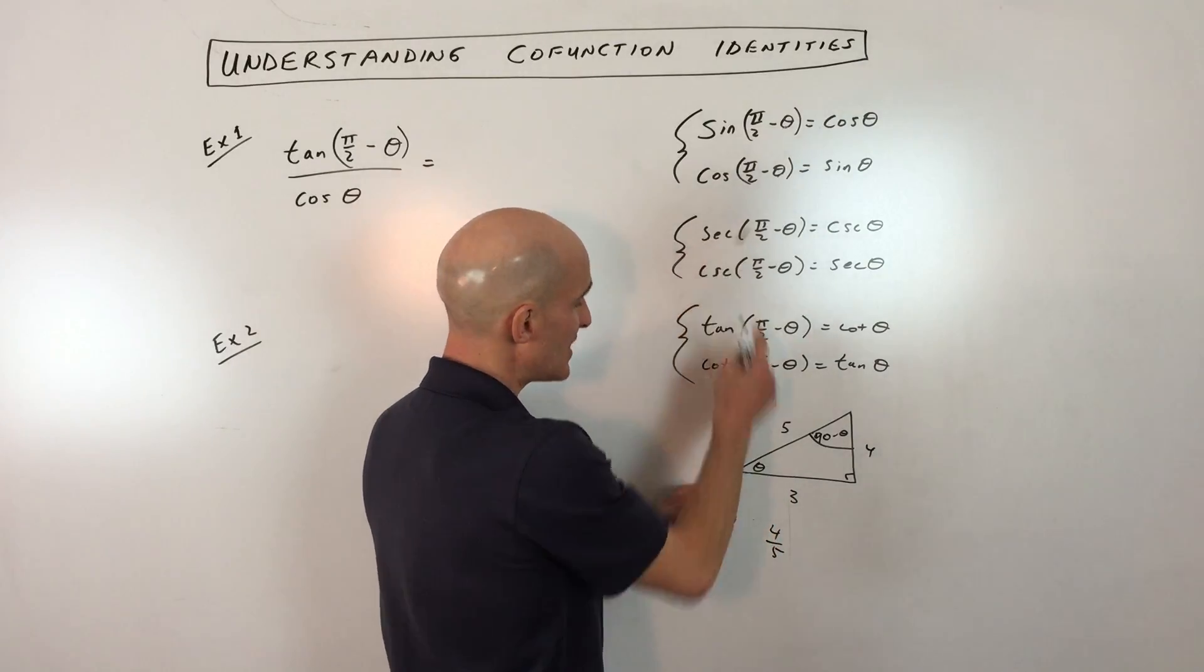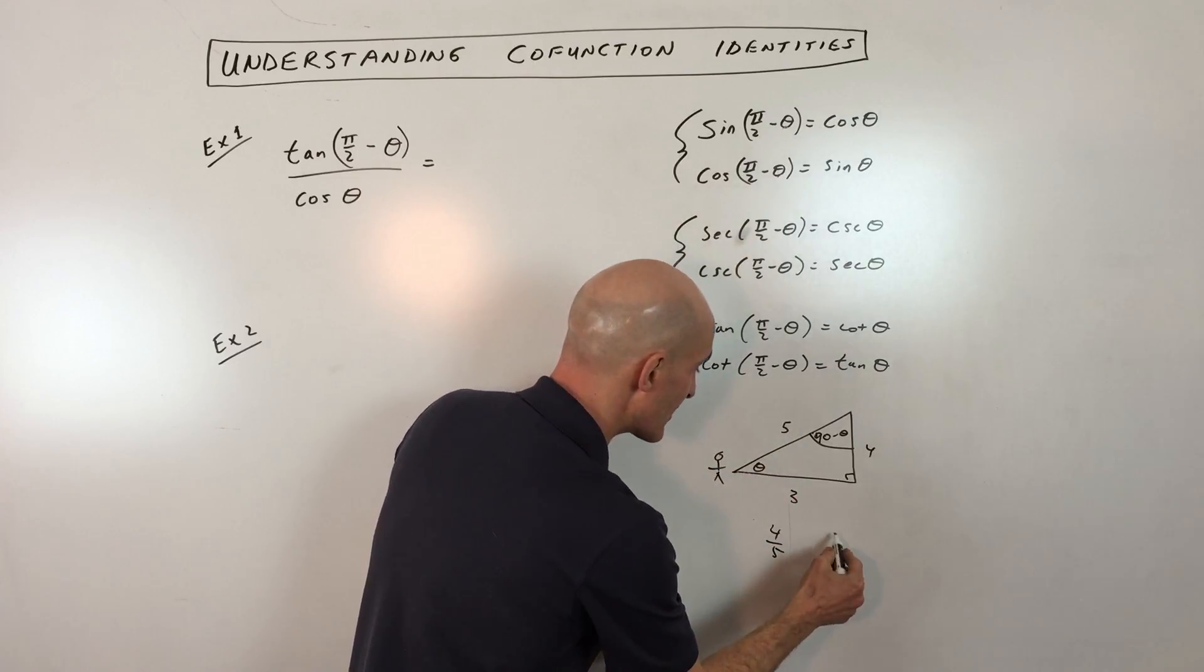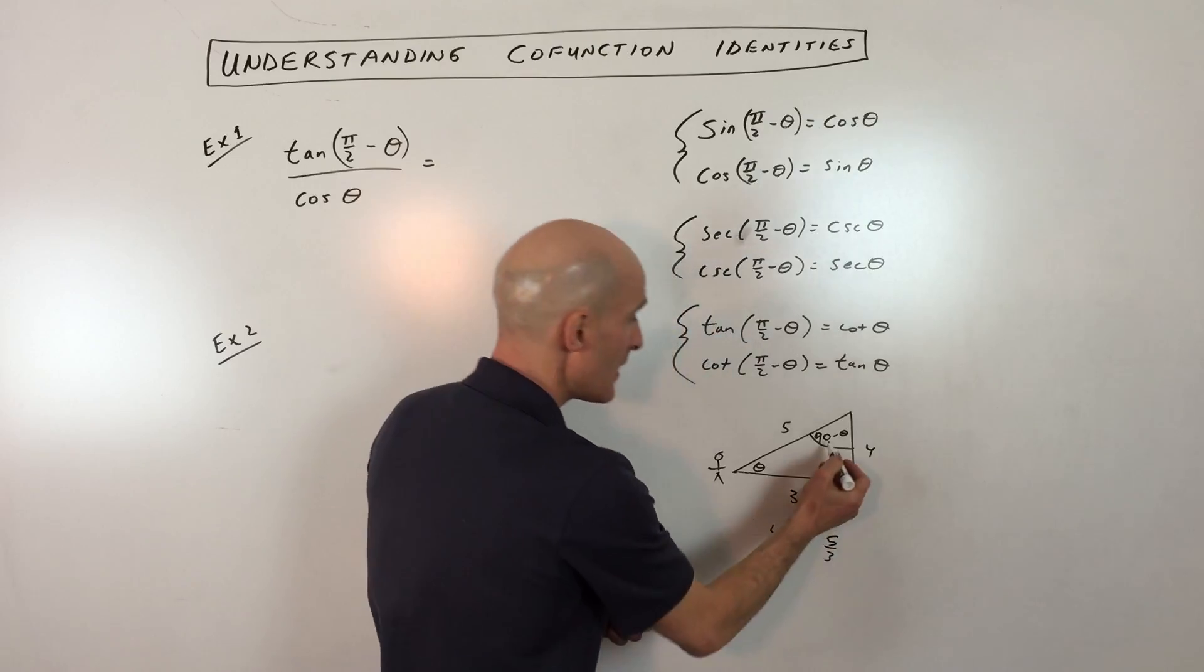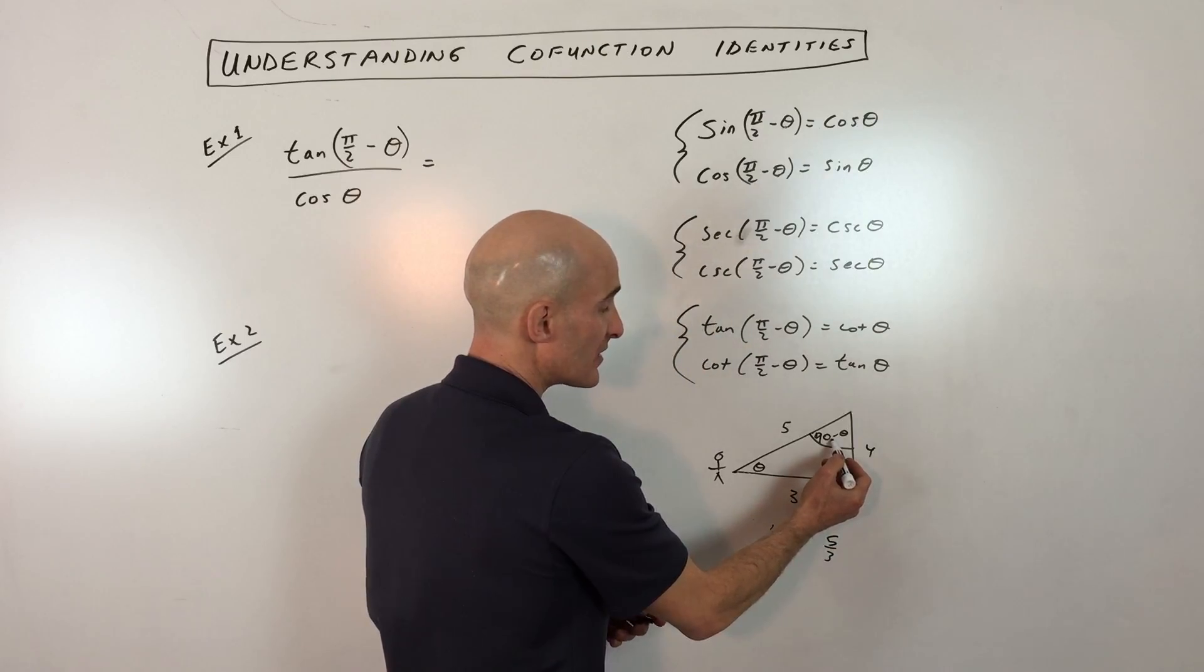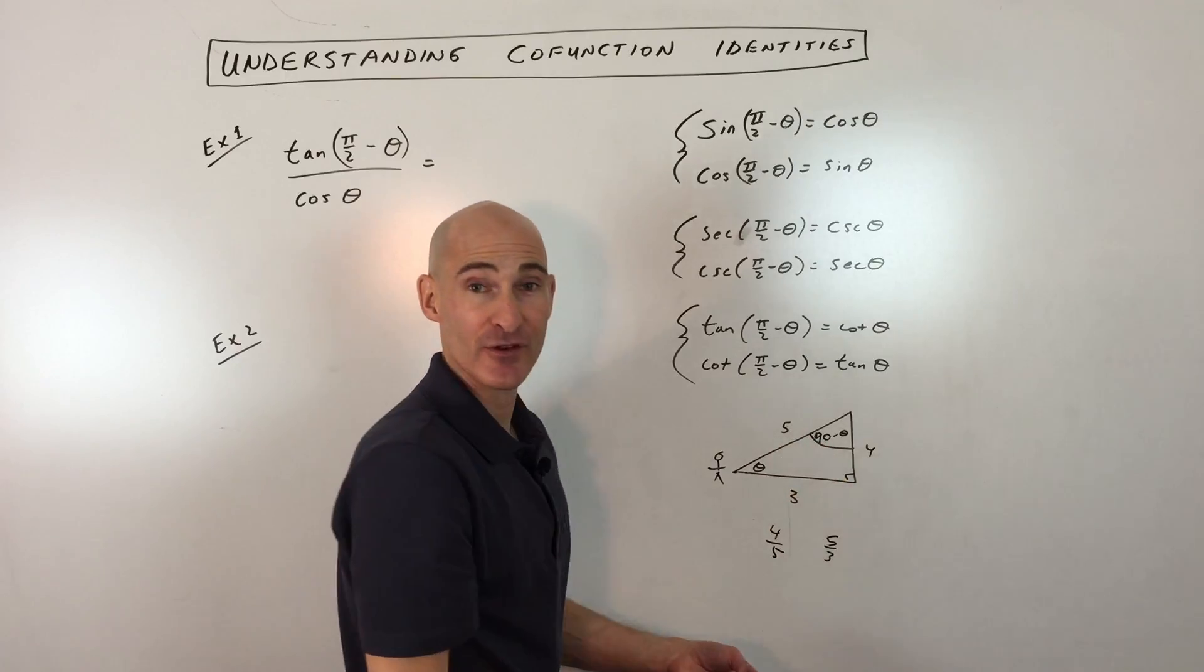So let's take this next one. Say you want to define secant of this angle. Secant is hypotenuse over adjacent. So that's five thirds. So let me write that down for us. But the cosecant of 90 minus theta is hypotenuse over opposite. So that's also five thirds.